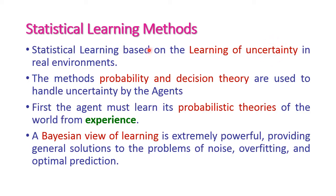In this uncertain environment, the statistical learning agent will learn. Two theories are very important: first is probability theory and second is decision theory. Using these two theories, the agent will learn this uncertain environment through experience. Apart from this, the Bayesian view of learning is extremely powerful, providing a general solution to the problems of noise, overfitting, and optimal predictions.